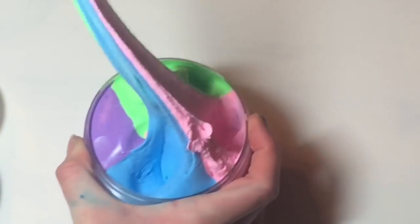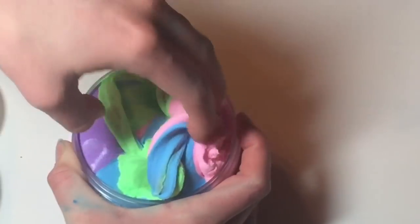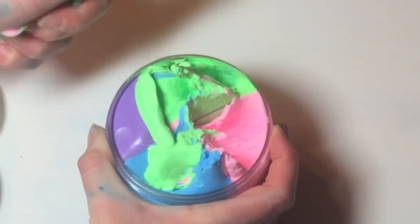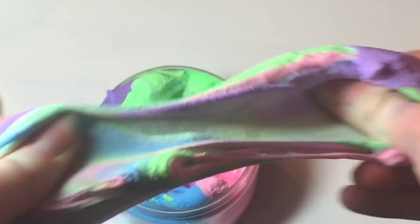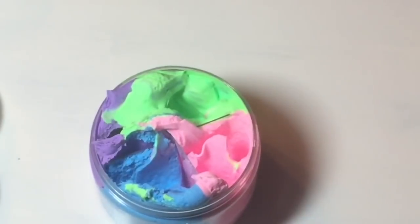Right off the bat I noticed that there were dividers in each one so if you didn't want to mix the colors together you could definitely keep each color separate. But I personally wanted to mix all of the slimes together to get one jumbo big slime.